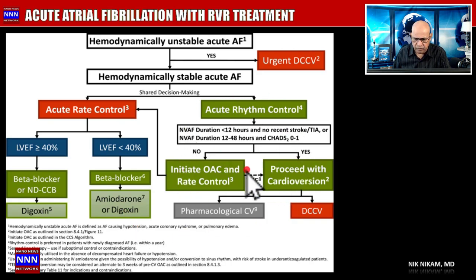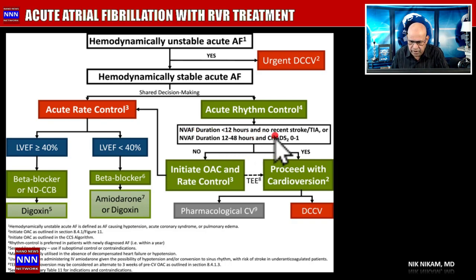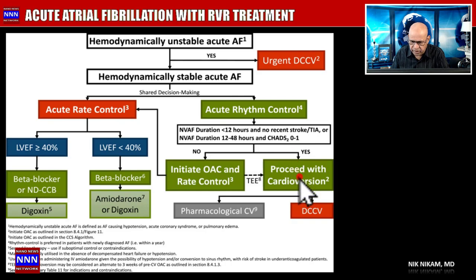For rhythm control, the first question is: how long has this patient had atrial fibrillation? Is this chronic AFib with recurrence of rapid ventricular response, or new onset? If new onset, how long has it been present? If less than 12 hours with no recent history of stroke or TIA, or if the duration was less than 24-48 hours and the patient has a CHADS-VASc score of 0-1 — meaning low thromboembolic risk — we can proceed with cardioversion.